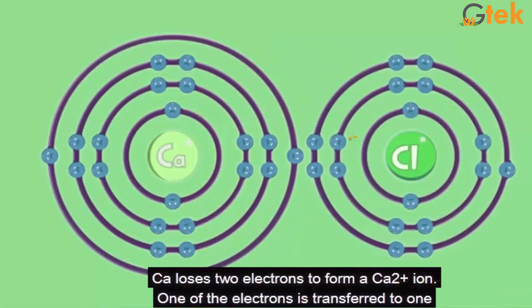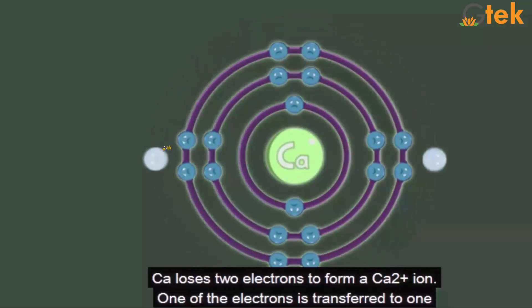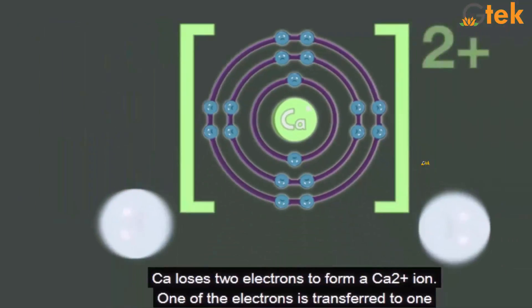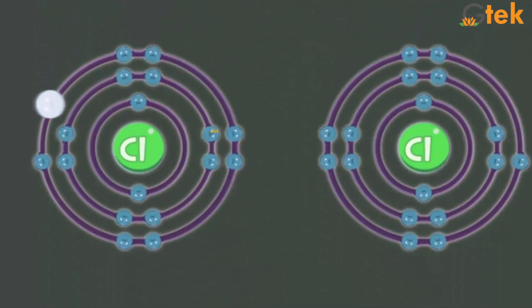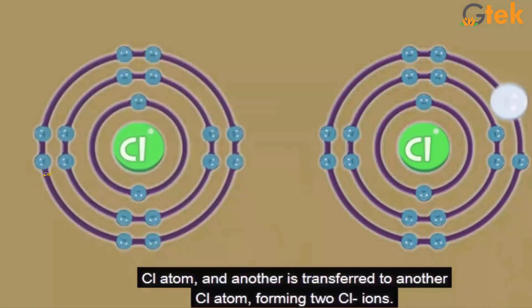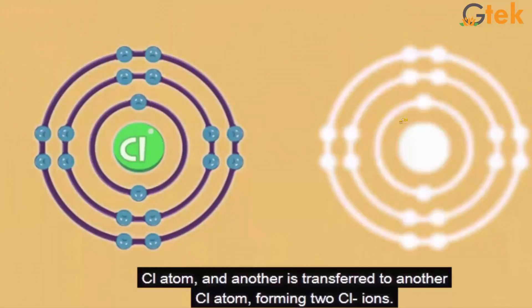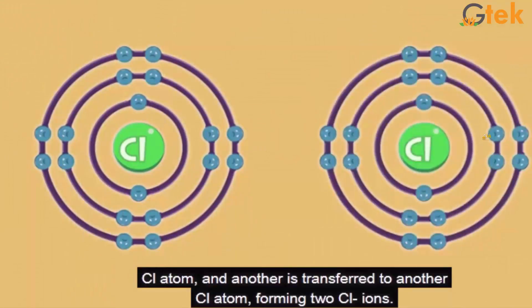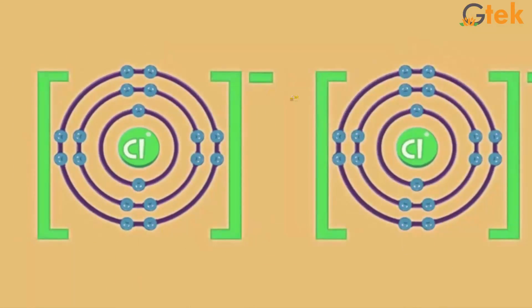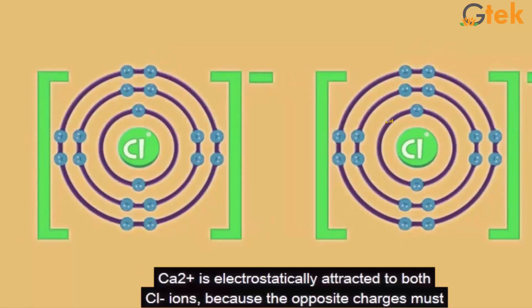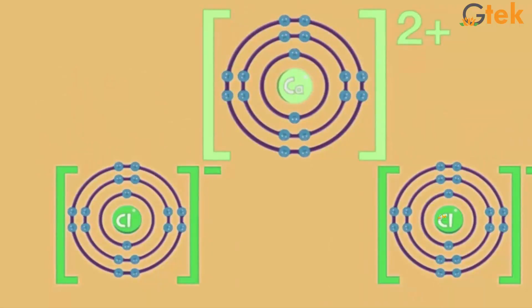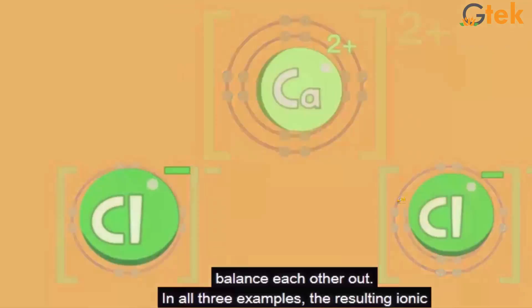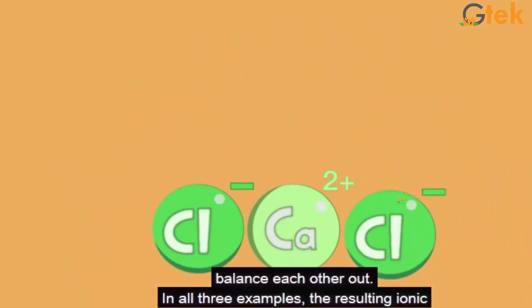Now consider calcium chloride. Calcium has 2 electrons in the outer shell, so it becomes Ca²⁺. Chlorine has 7 electrons, so one additional electron joins each chlorine atom, making each Cl⁻. We get Ca²⁺ and two Cl⁻ ions, forming CaCl₂. They are oppositely charged and balance each other.